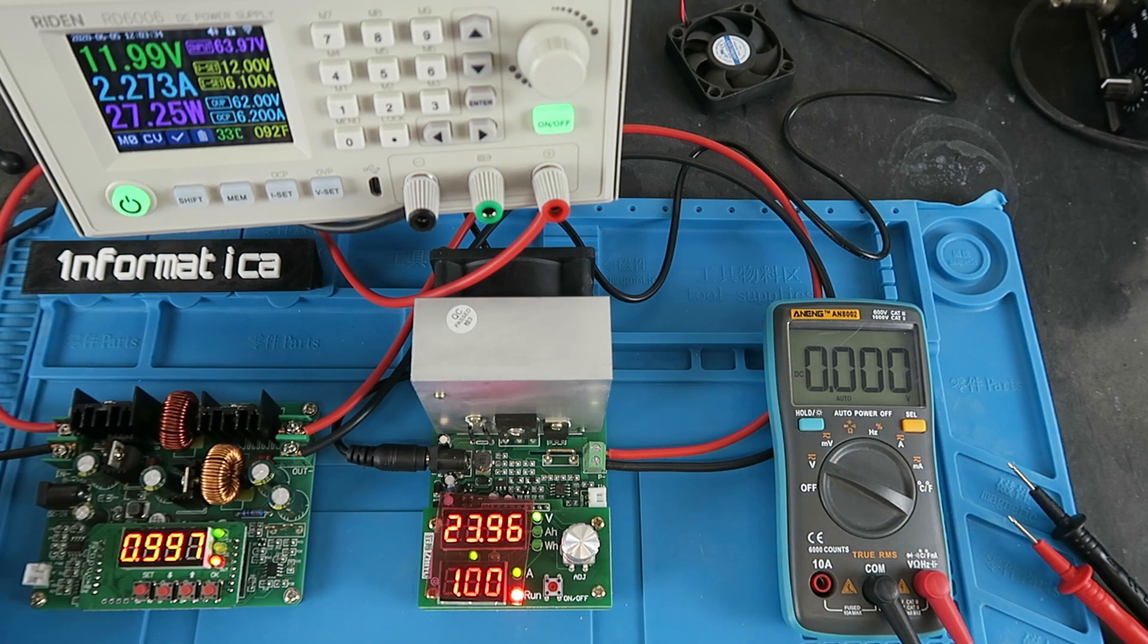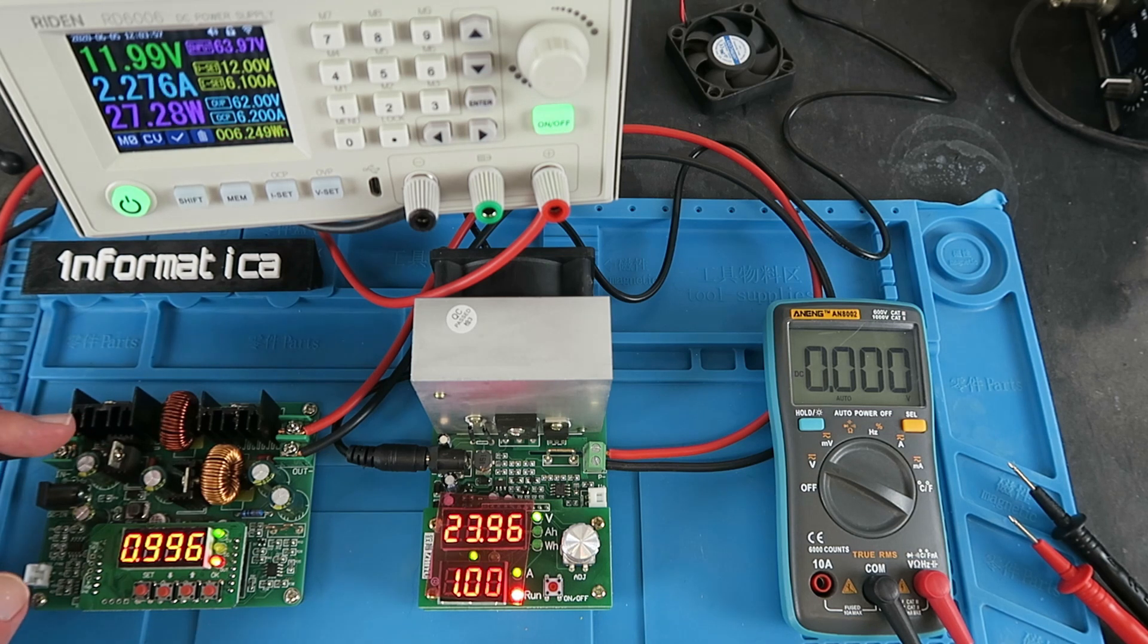that the current on my power supply here is 2.28 amps. As it's in its boost configuration, there's no such thing as a free lunch. The power has to come from somewhere. Therefore, to step up from 12 to 24, the boost converter has to work harder and therefore draws a lot more current.